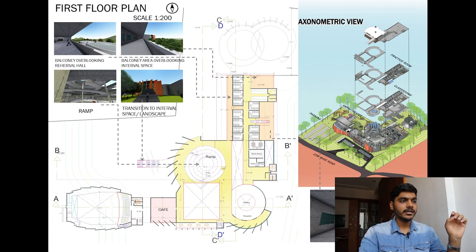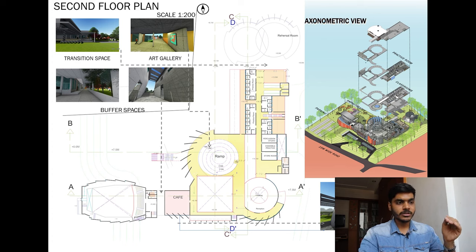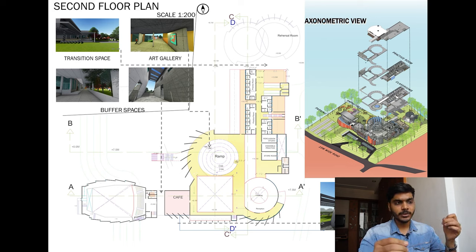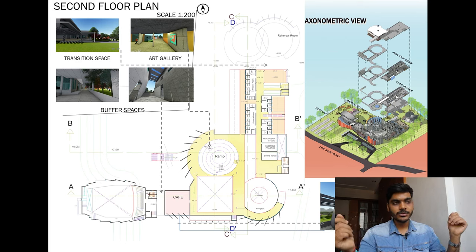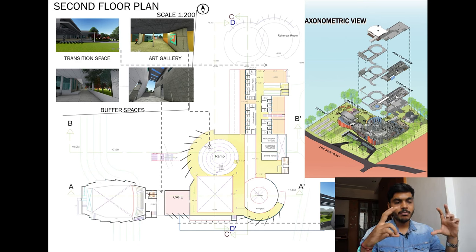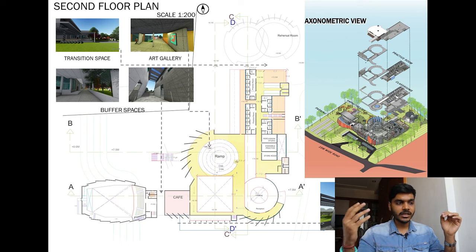Next, the second floor plan has art gallery transition spaces, buffer spaces, and a cafe. On the second floor we have a storeroom, ensemble room, percussion studio, and practice rooms. One tip: practice rooms require a single person but you can make them transparent with simple partitions rather than boxing people in. Also try to make one block soundproof so you don't disturb what other people are doing on other floors.